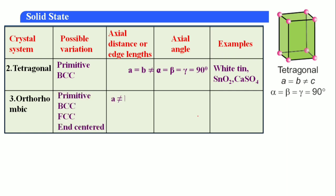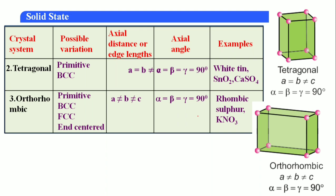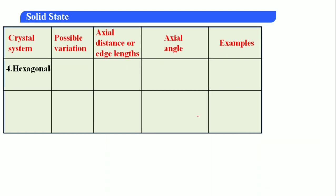Third: orthorhombic — primitive; a ≠ b ≠ c; α = β = γ = 90°; examples: rhombic sulfur, KNO₃. Fourth: hexagonal — primitive; a = b ≠ c; α = β = 90°, γ = 120°; examples: graphite, ZnO, CdS.